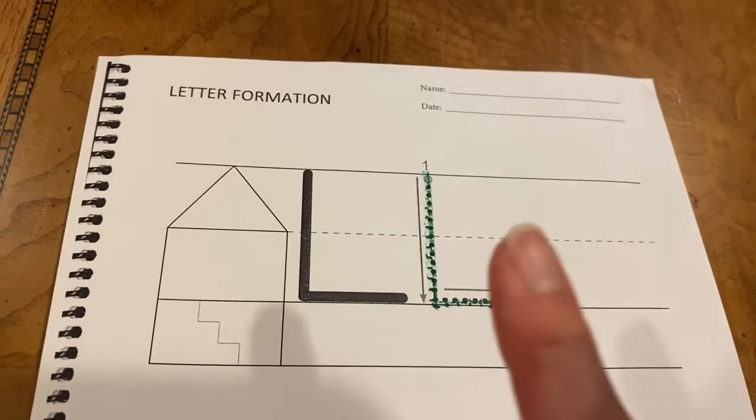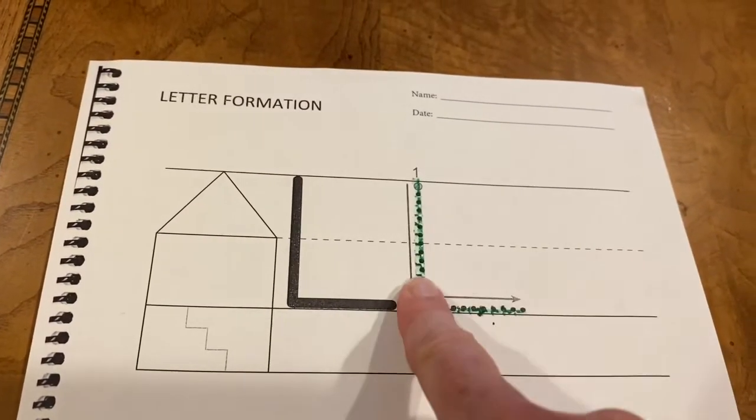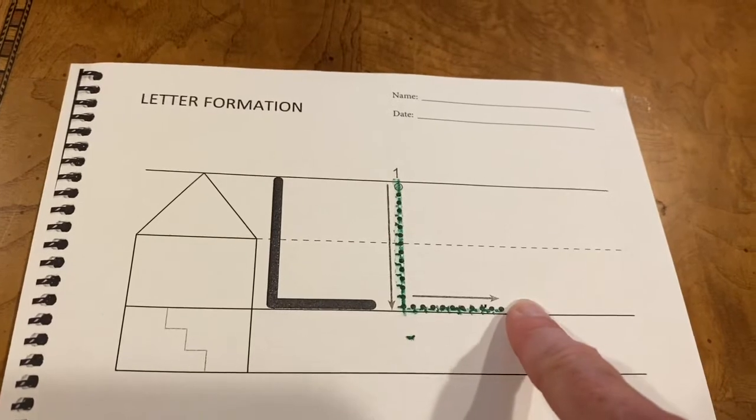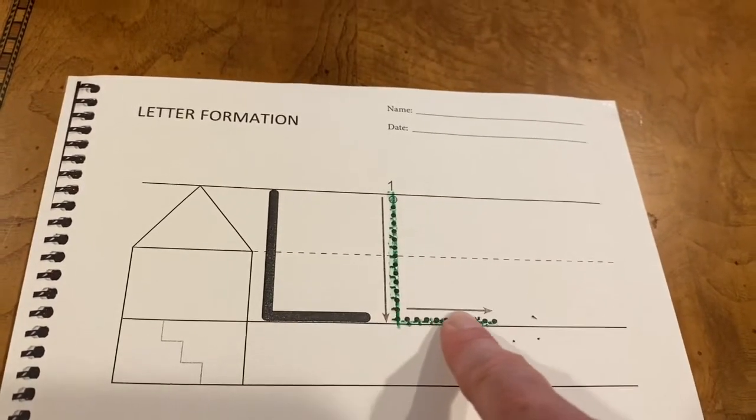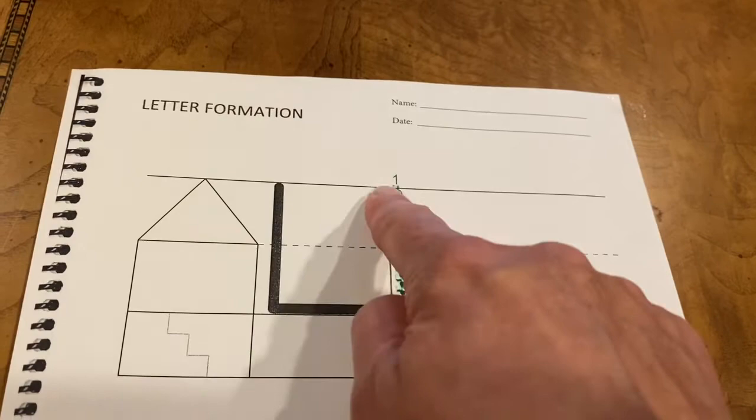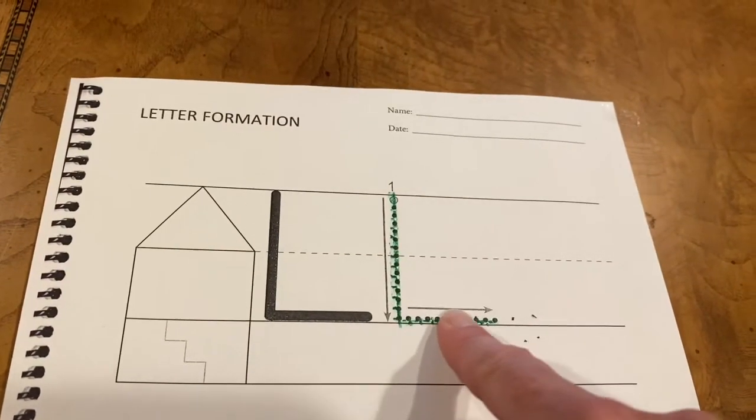Now you're going to practice tracing. Take your tracing finger and trace down and across. Line down, line across. One more time. Line down, line across.